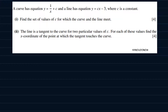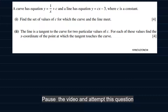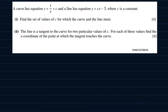I'd want you to look at this question here and try to attempt it before checking out my solutions, so you can start now. The question goes: a curve has equation y = 1/(x + c), and a line has equation y = cx − 3, where c is a constant. In part one, find the set of values of c for which the curve and the line meet.